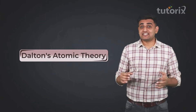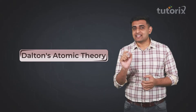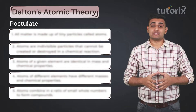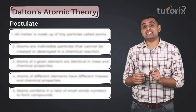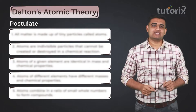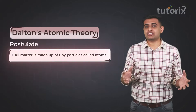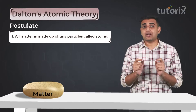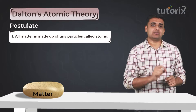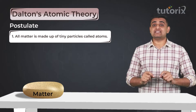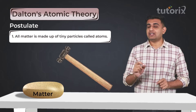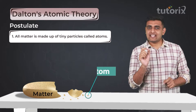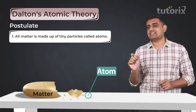Dalton's Atomic Theory is divided into five major postulates. In the first postulate, he explains that all matter is made up of tiny particles called atoms. It means if we keep on dividing a matter into smaller and smaller sections, what we get in the end is an atom.